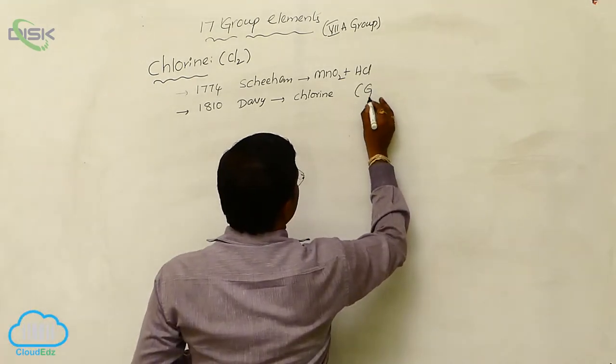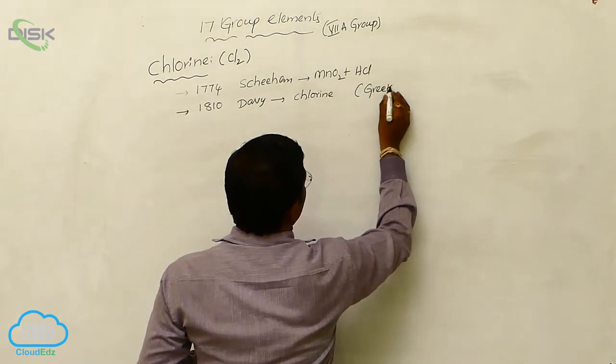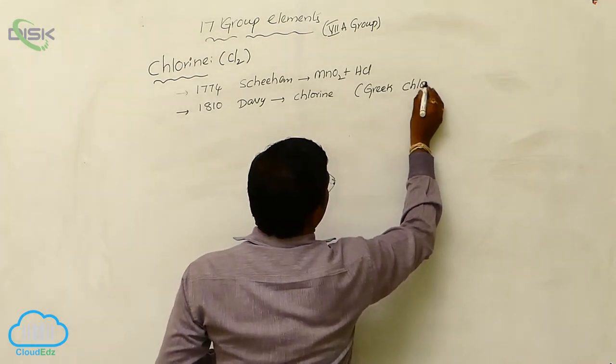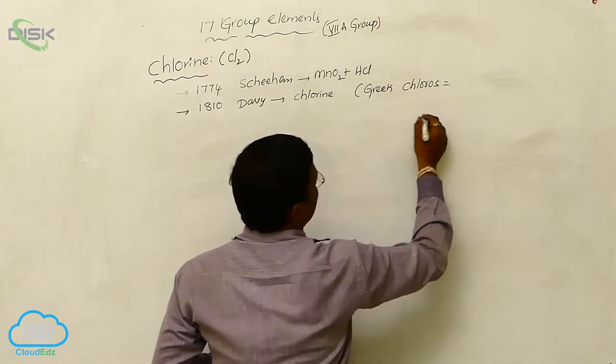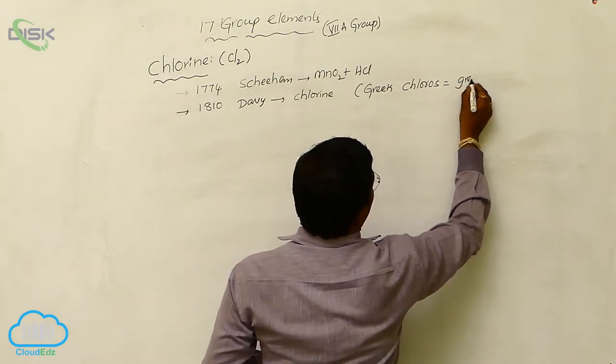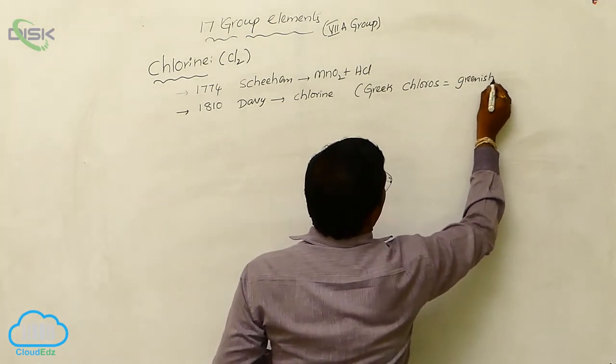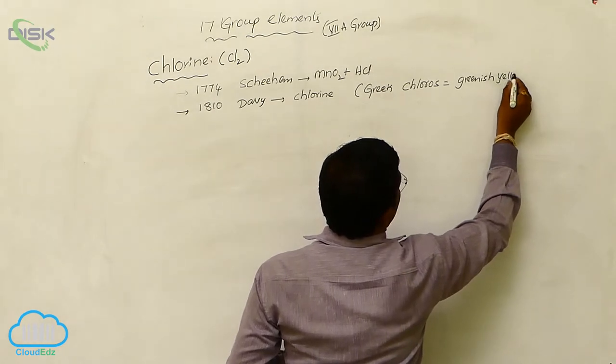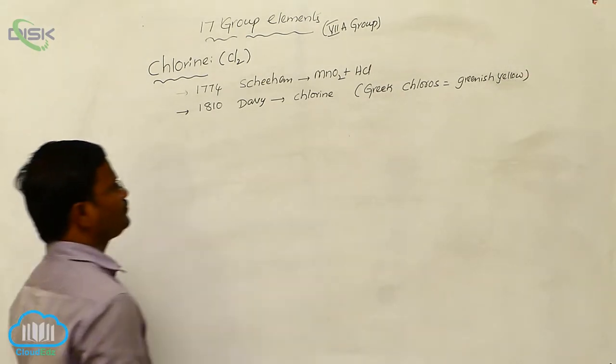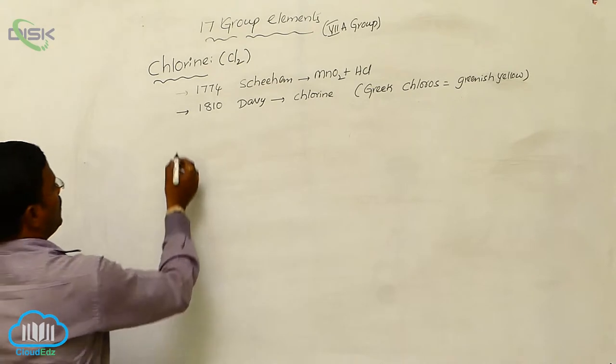In Greek language, chloros equals greenish yellow. Chloros means greenish yellow.